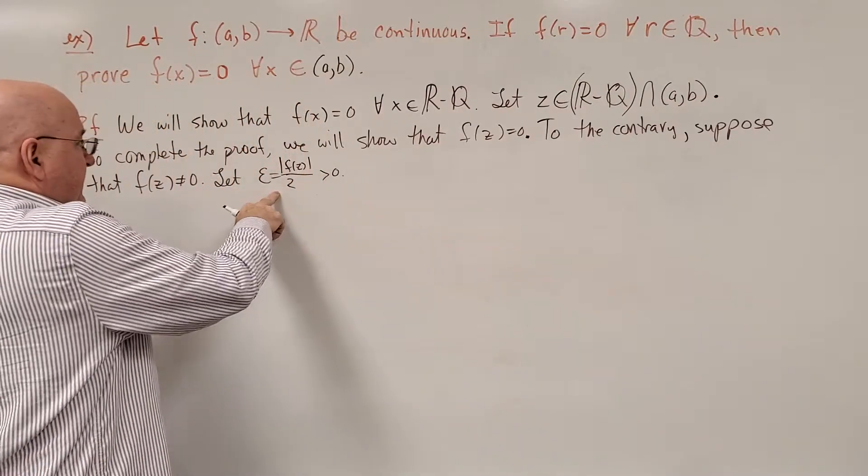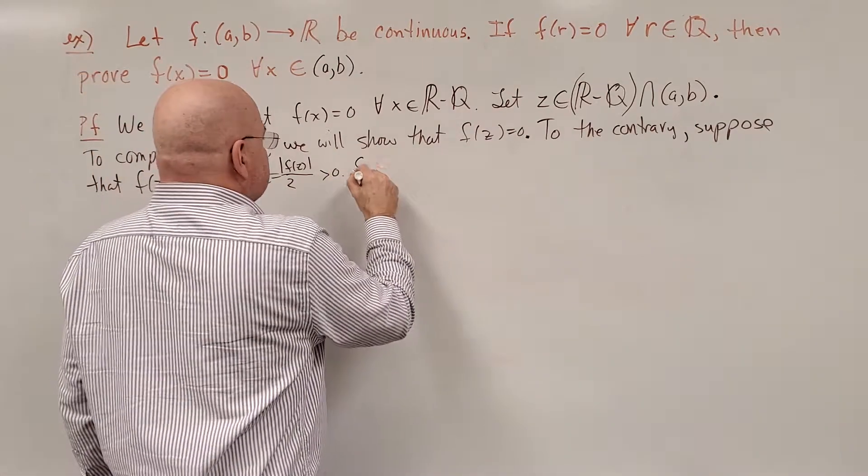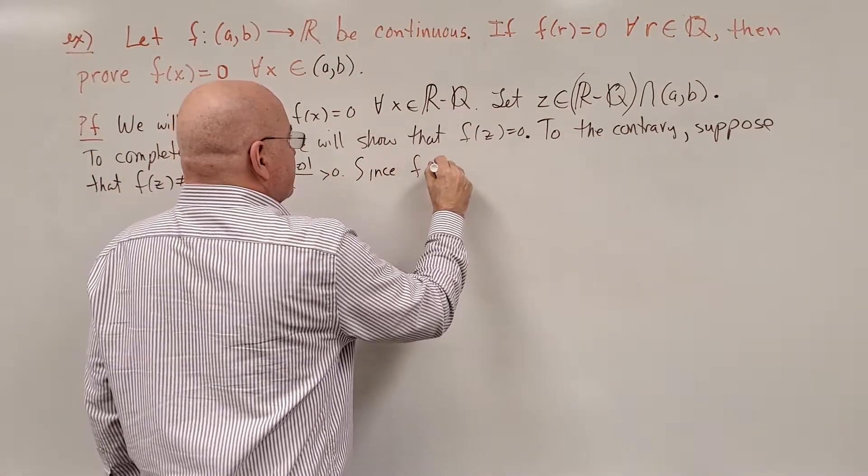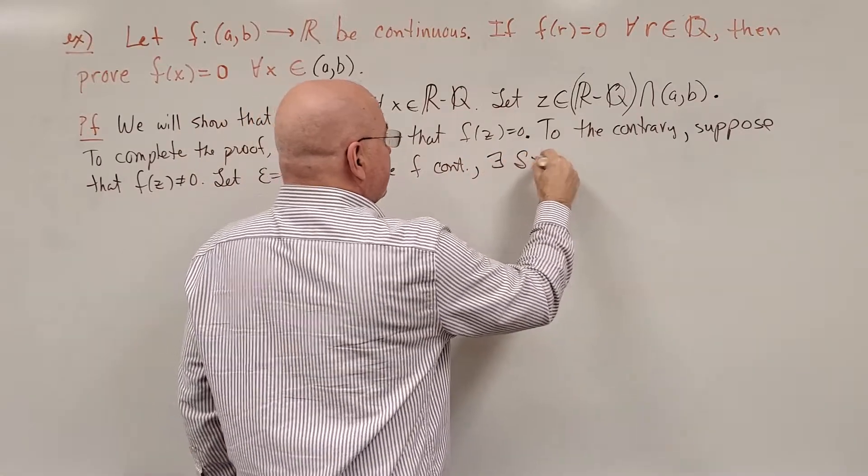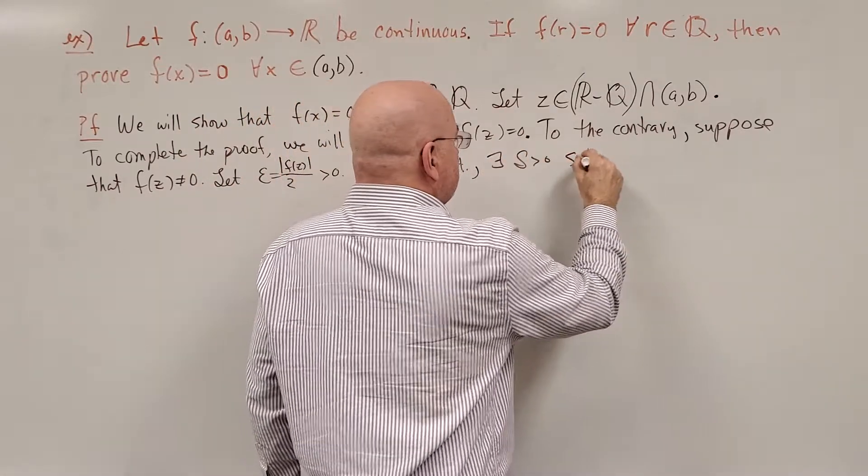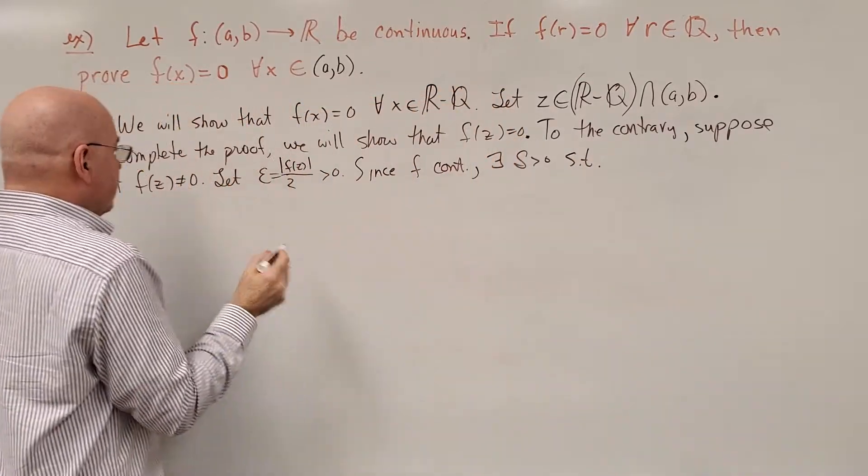Okay, so we let epsilon equal half of that distance. Okay, since f is continuous, there exists a delta greater than 0, such that, if you'll come down to the next line,